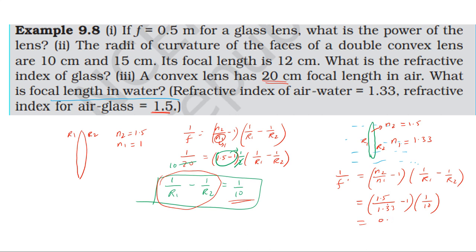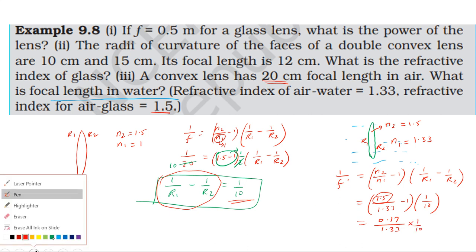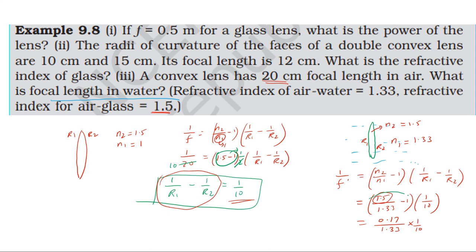Substituting values: 1/f' equals (1.5 minus 1.33) divided by 1.33, into (1/R1 minus 1/R2). The numerator becomes 0.17 divided by 1.33, and using this ratio with the known air focal length of 20 cm, we compute the focal length of the lens in water.